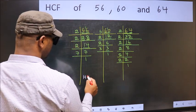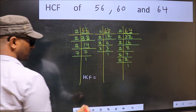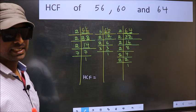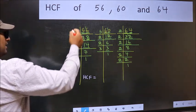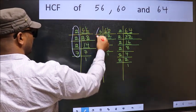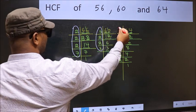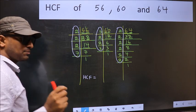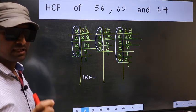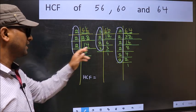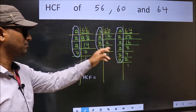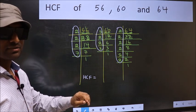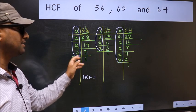So our HCF is the product of numbers which are present in these 3 places: here, here and also here. I repeat, HCF is the product of numbers which should be present in these 3 places.